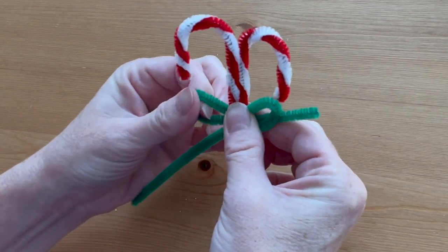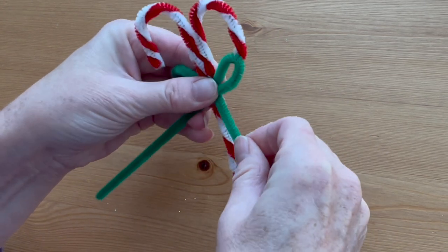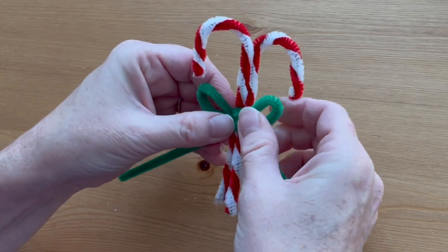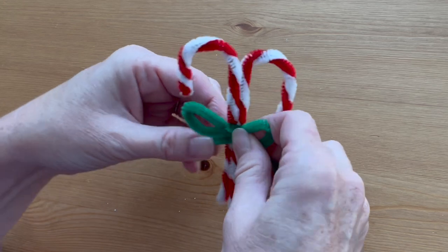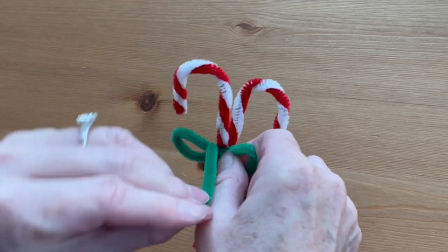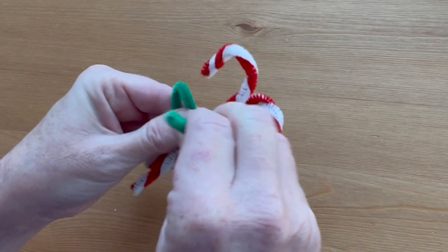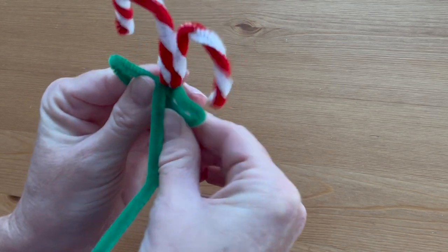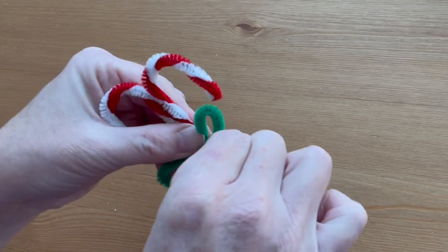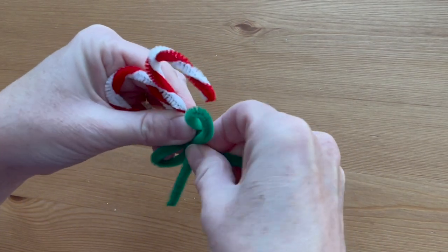And then with the longer side, bring it around back and wrap it down the middle of the bow. Now twist the two ends together one or two times to keep everything in place.